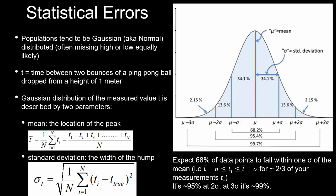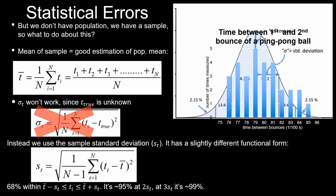You might wonder why we even talk about this population — this theoretical limiting case of having an infinite number of data points. We don't possess this population; we only have a sample. Well, we can estimate the properties of the population. The mean of our sample is a good estimation of the population mean, so we can use the same formula to estimate the mean of the population. The same thing is not quite true for the standard deviation, though.